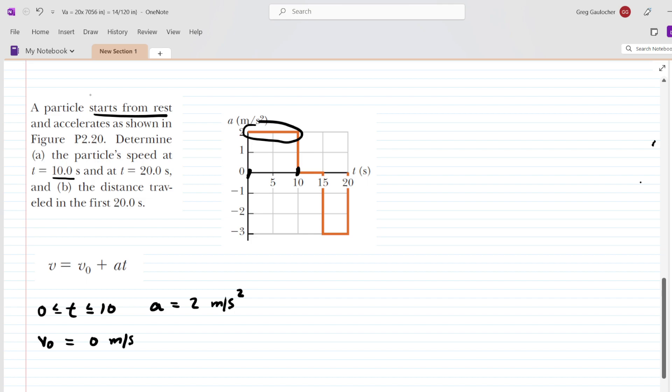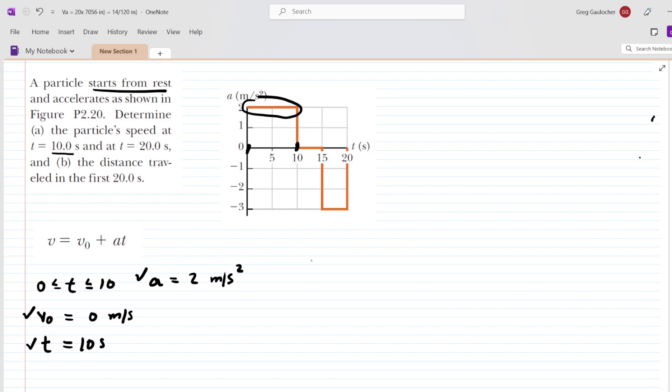One more piece of information we know is that if we're starting at 0 seconds and ending at 10 seconds, then our time interval is just 10 seconds. So with the acceleration, initial velocity, and time, we can easily calculate the final velocity of the particle at the 10-second mark.